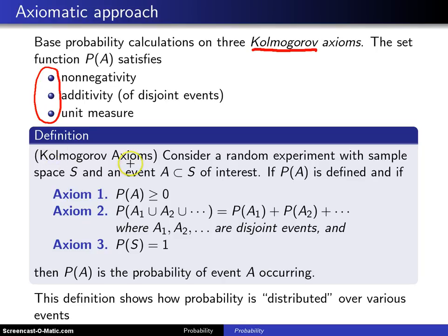Now to give a little more detail, here is the definition for the Kolmogorov axioms. Consider a random experiment with sample space S and some event A, which is a subset of S, which is of interest. If P of A is defined, and if axiom 1 says that P of A is greater than or equal to 0, that's the non-negativity axiom.